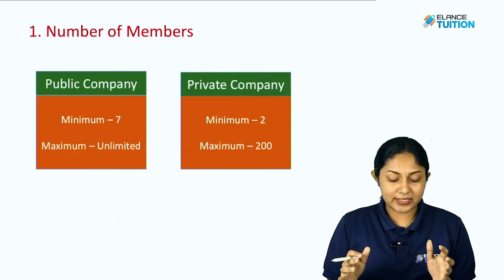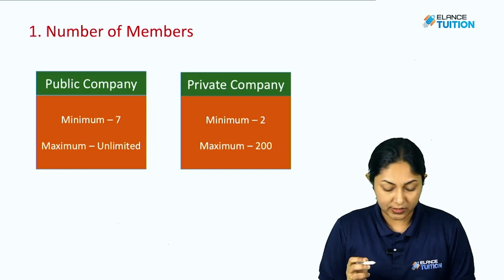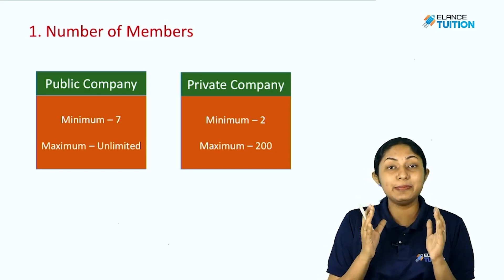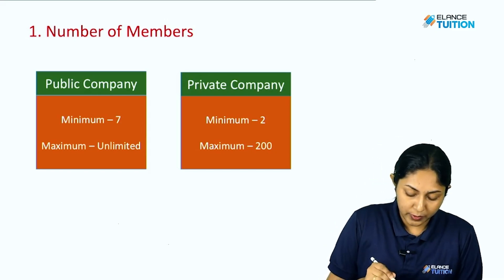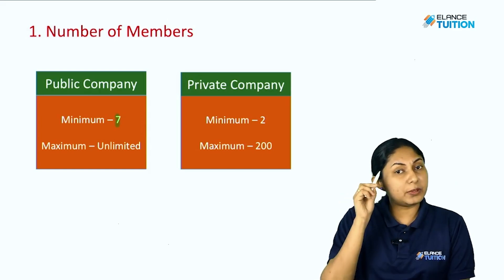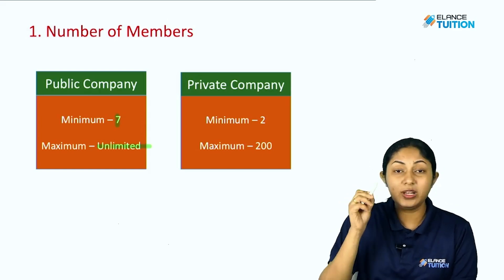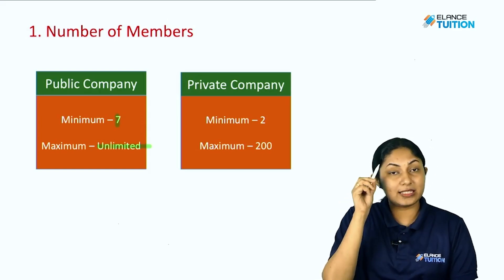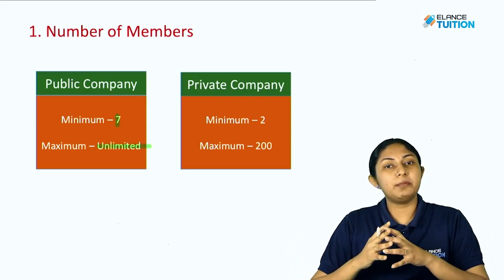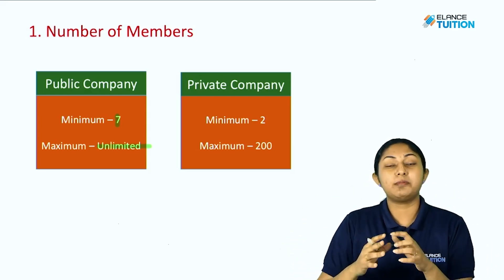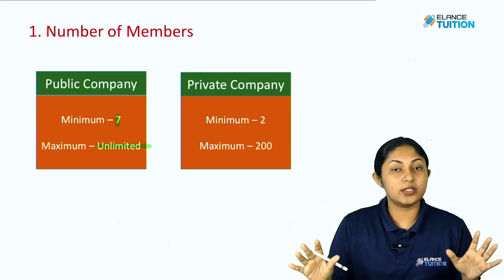The first basis of difference is number of members. In the case of a public company, a minimum of 7 members are needed to form a public company. For the maximum, there is no limitation — unlimited members are allowed.